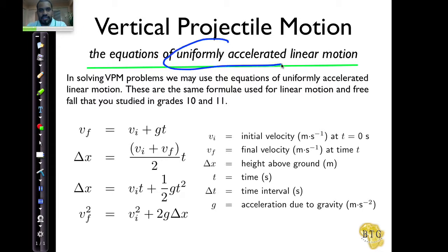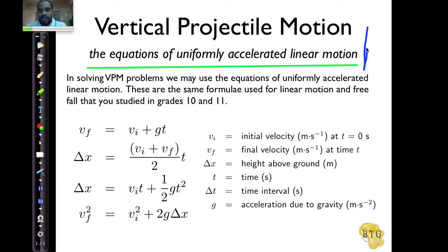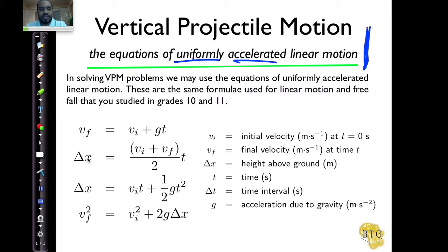What exactly is uniformly accelerated linear motion? Linear, as you know, is something going in a straight line. So the motion we are dealing with is simply motion going up in a straight line and coming down in the same straight line. Uniformly accelerated means the acceleration does not change from point to point — it's not speeding up and then accelerating even more. It's at a constant rate of change.